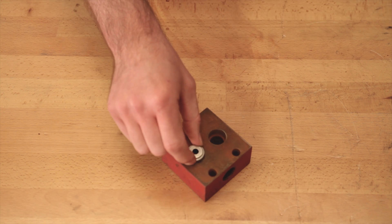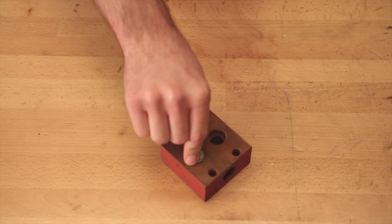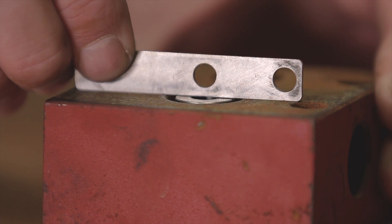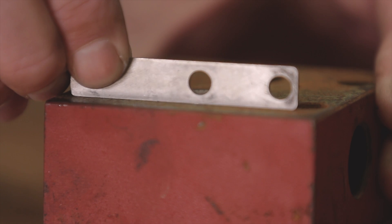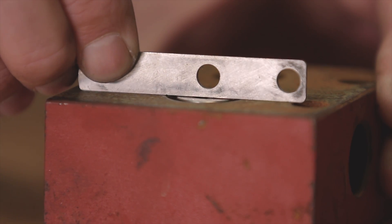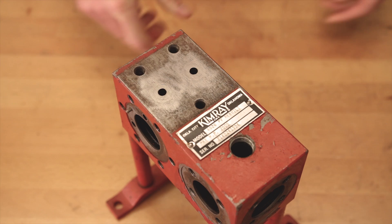Now you can inspect your discharge block. Put the seats in the block and take a straight edge and lay it across the seats. They should be close to flush with the block surface. If the seats are sitting too low, it may cause a leak between the block and the body. You'll also want to make sure that these ports are clear.